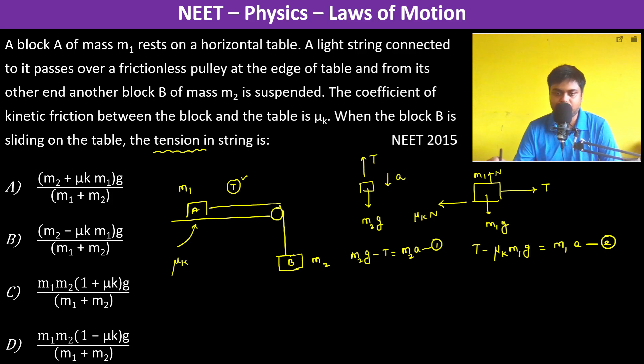So we have T minus μk M1g equals M1 times a. What is a? M2g minus T divided by M2. Therefore, M2 T minus μk M1 M2 g equals M1 M2 g minus M1 T.